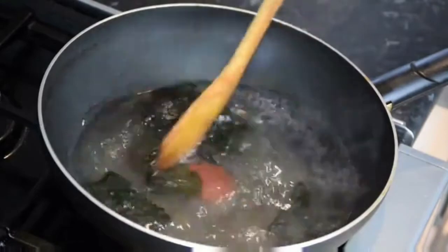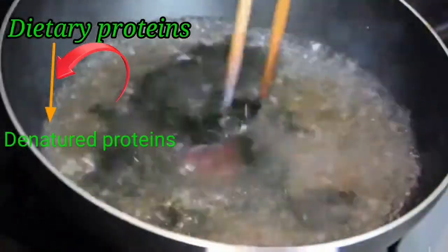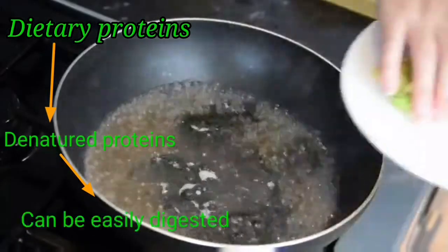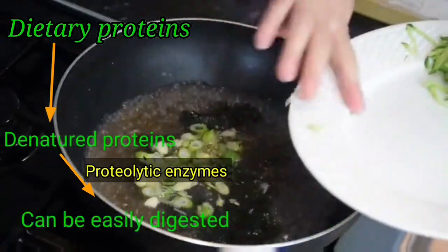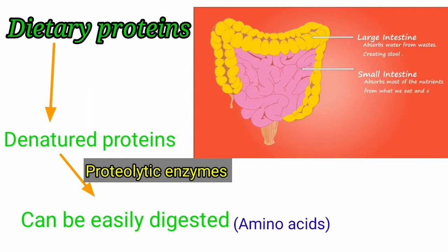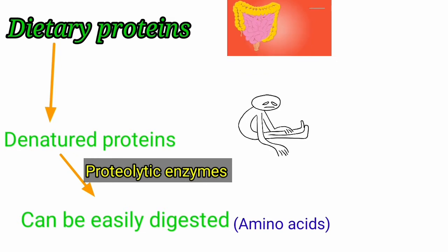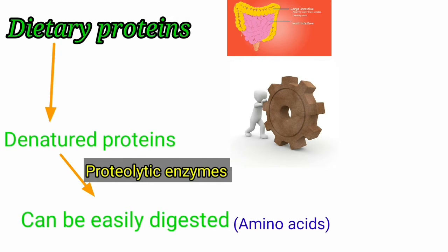These dietary proteins are denatured on cooking. Denatured proteins are easily digested, and enzymes involved in the digestion of proteins are called proteolytic enzymes. All these enzymes are hydrolases and convert proteins into amino acids. These proteolytic enzymes are secreted as inactive zymogens, which are converted to their active form in the intestinal lumen. This would prevent the auto-digestion of the secretory cells.